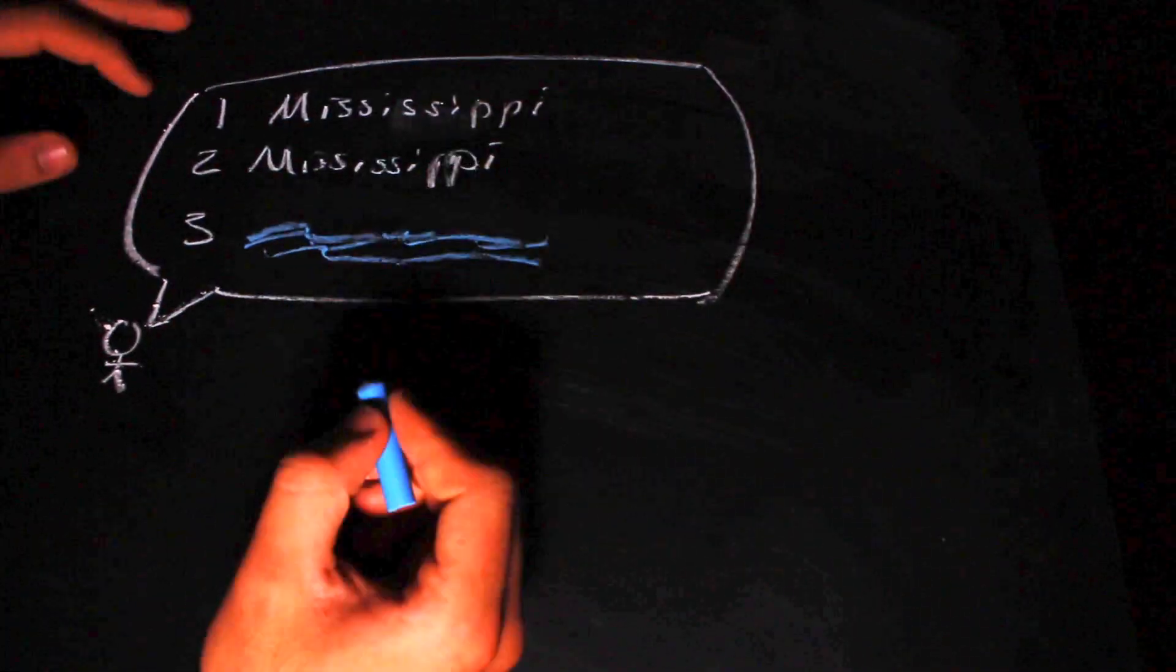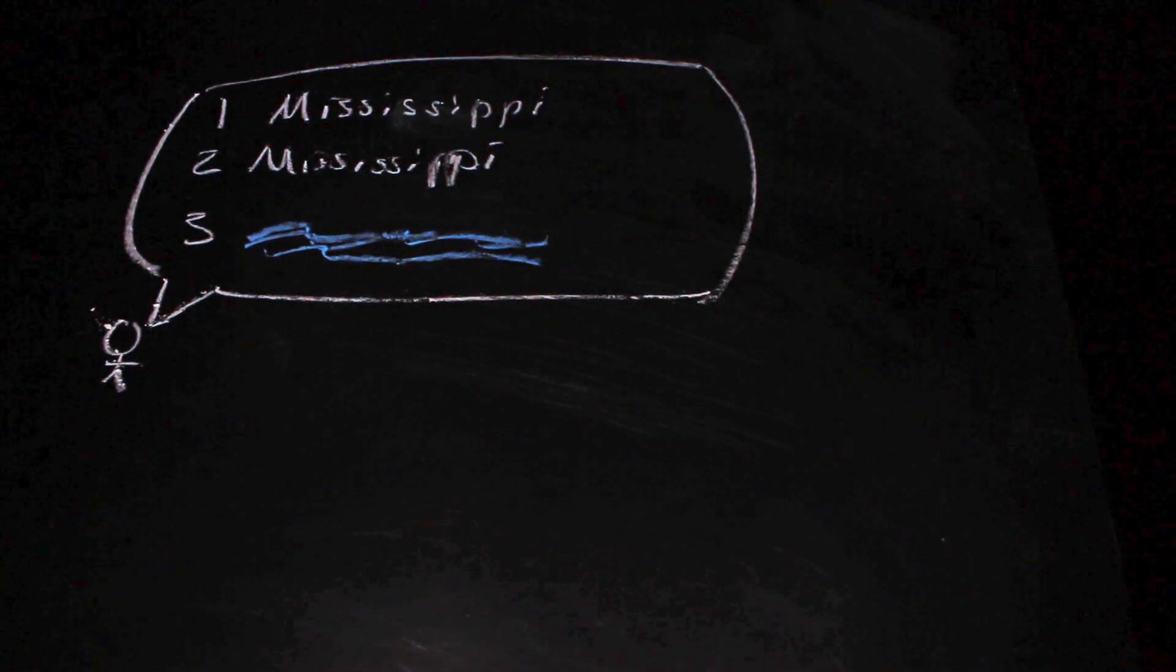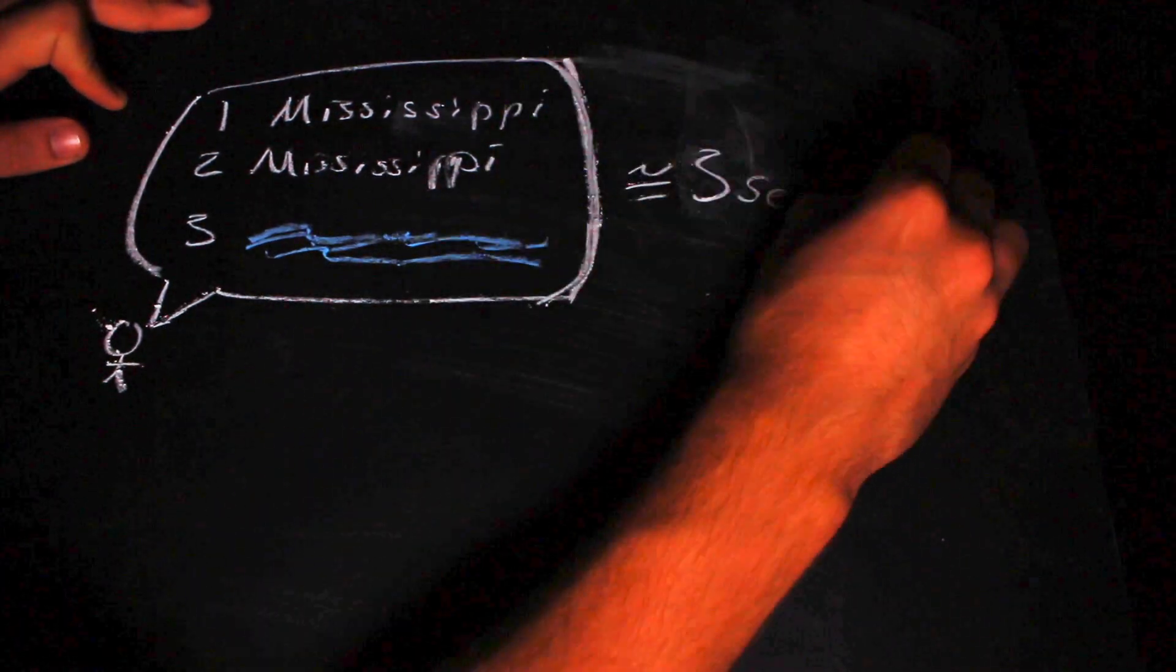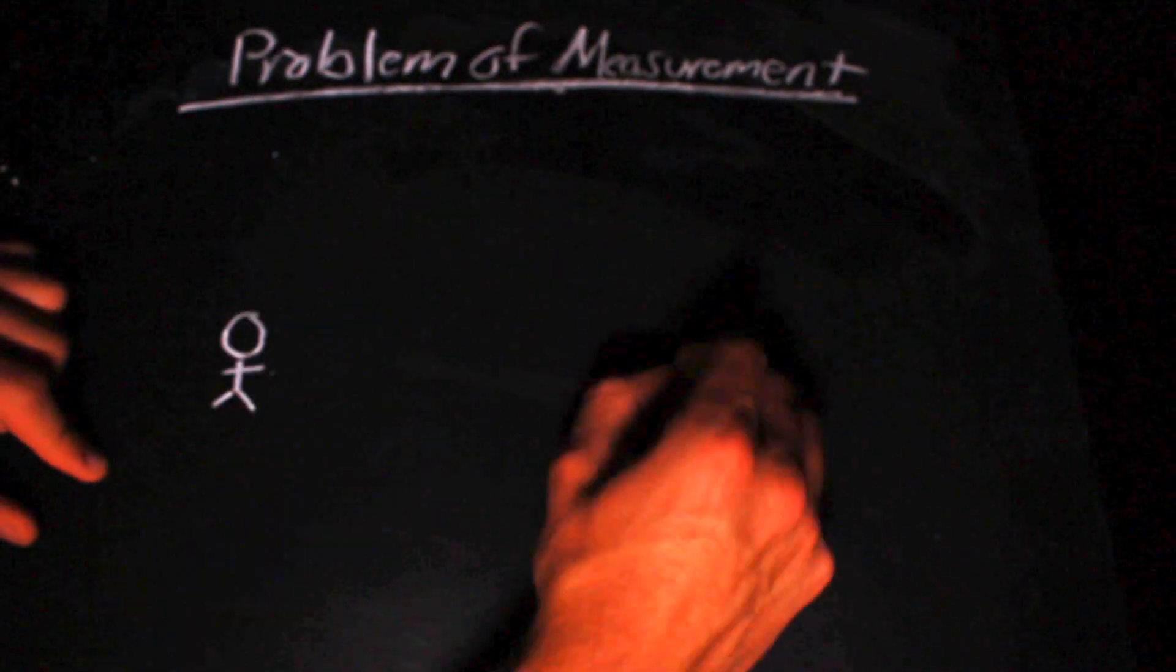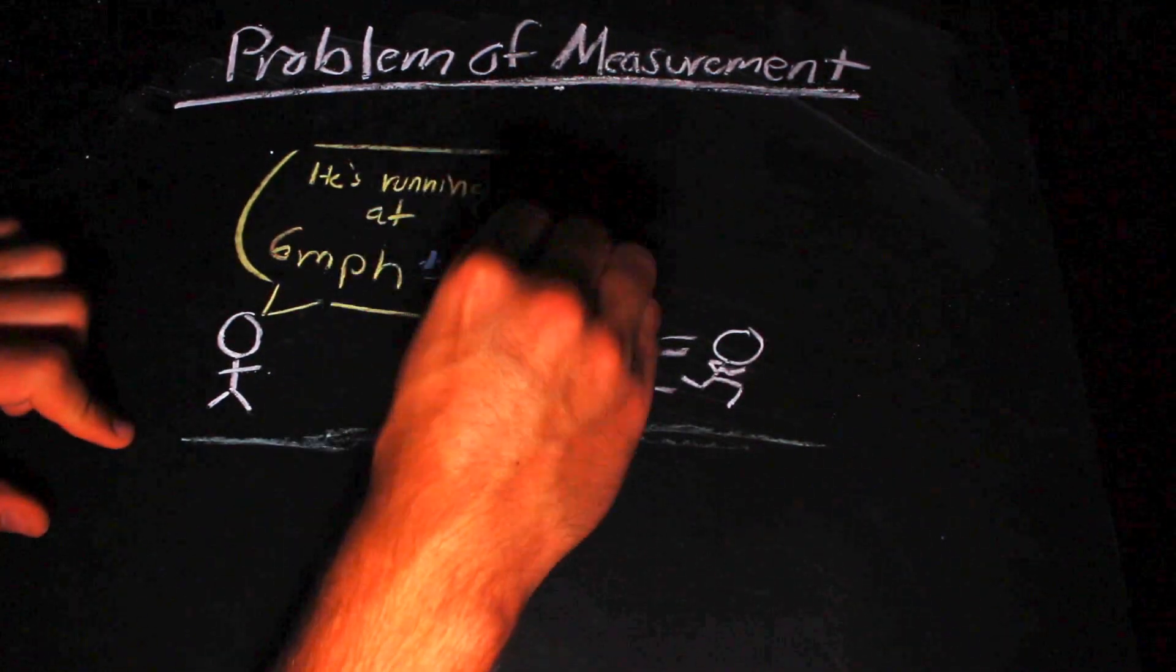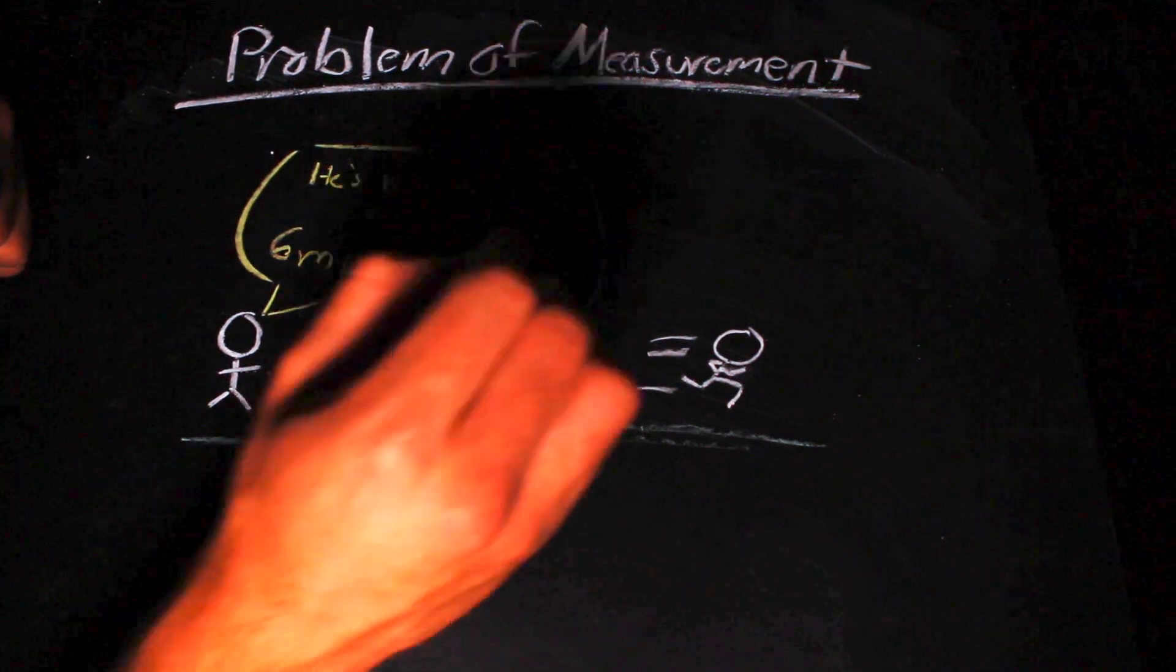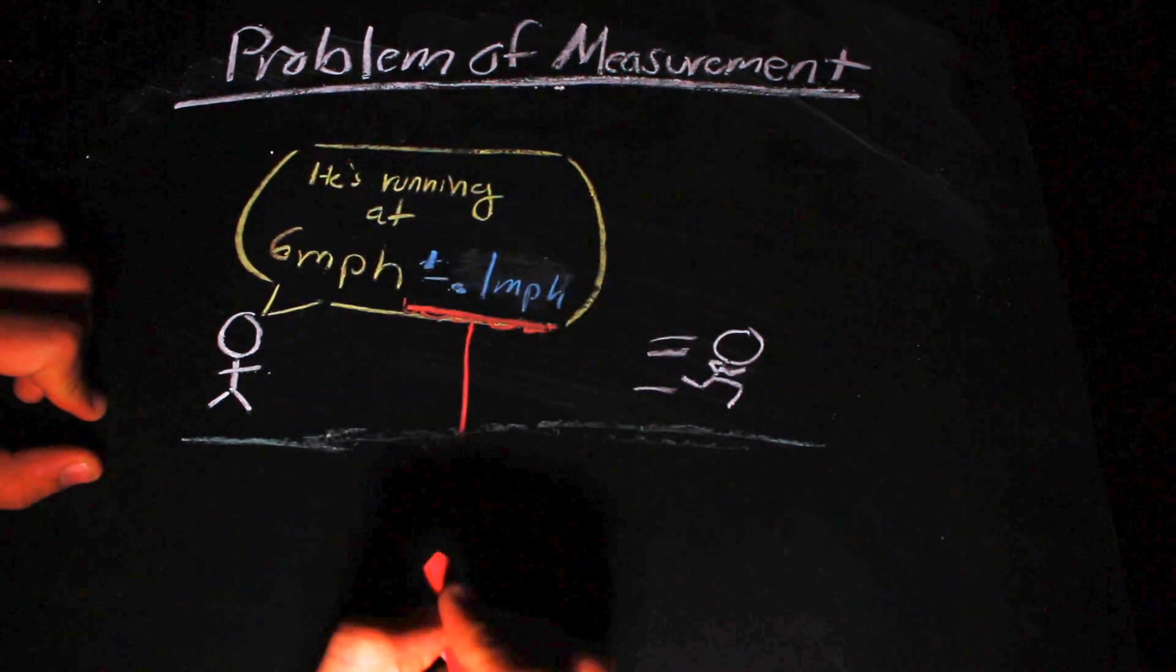Sure, you could attempt to estimate the duration by counting the same number over and over again, but you're never exactly on time. Essentially, this is the problem with measurement. How certain are you that your measurement is correct? The higher your certainty, the better. But is absolute certainty possible?